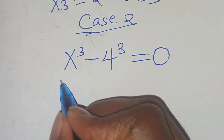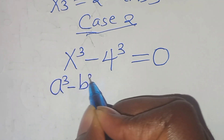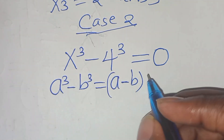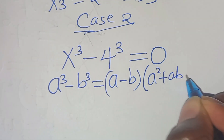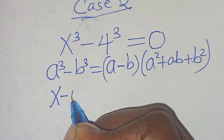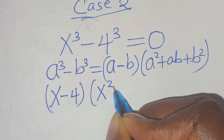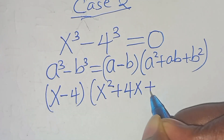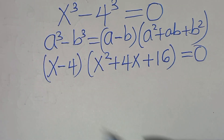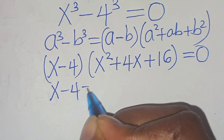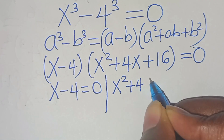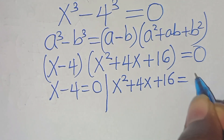This is the difference of two cubes, expressed as a³ minus b³, which can be expressed as (a minus b)(a² + ab + b²). Applying this identity, we have (x minus 4)(x² + 4x + 16) equals 0.